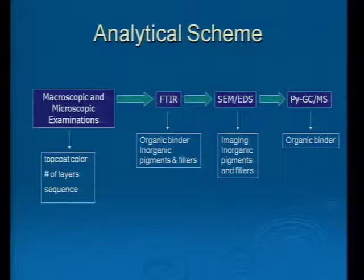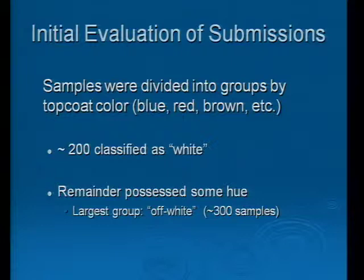The samples were initially divided into groups by their top coat color — a blue group, a green group, a red group, et cetera. Doing this, we had about 200 samples classified as white. The rest of the samples had some sort of a hue to them, and the largest group of hued samples was off-white, with about 300 samples in that category.